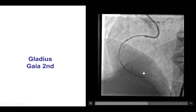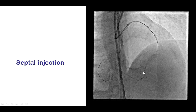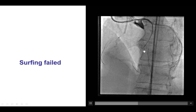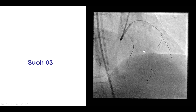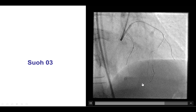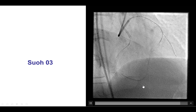We therefore changed to retrograde crossing. We were able to engage the first septal, did an injection, and there was significant tortuosity. Surfing was not successful, and then we tried with the SUO-03 guide wire, which is a very soft tip guide wire. It had some difficulty but eventually successfully crossed from the septal all the way into the posterior descending artery. This wire requires patience — it's very soft, but sometimes it takes a little time to cross the septal.